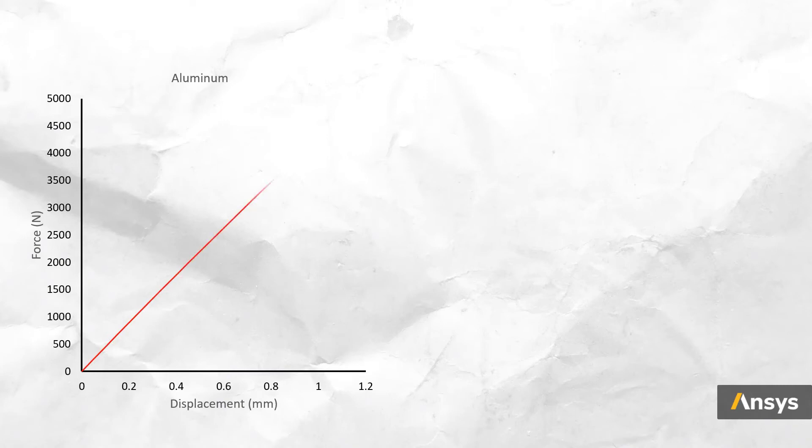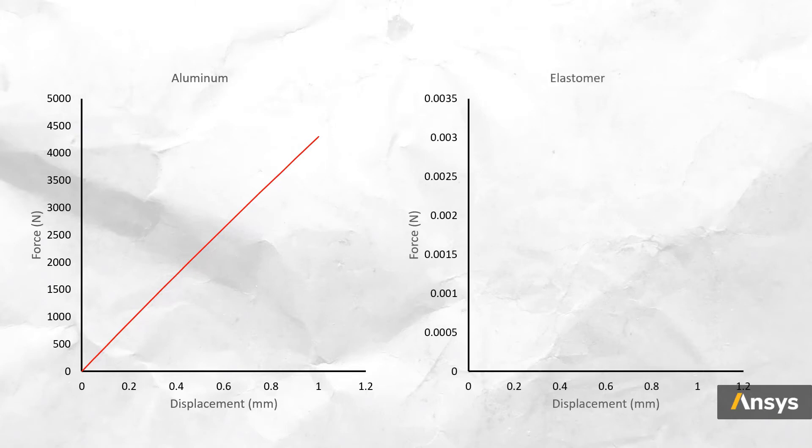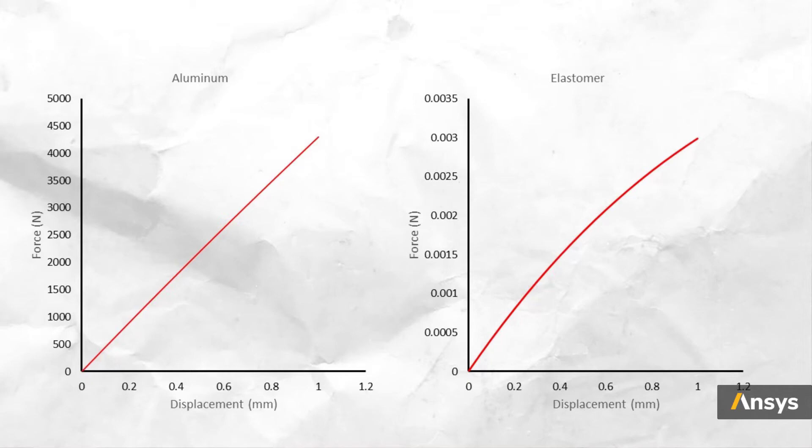However, due to their nonlinear material behavior, they tend to have a nonlinear force response even at small deformations. To demonstrate this, we perform a displacement-controlled test on two dog bone samples — one made of elastomer and the other made of aluminum. Since we are operating under small deformation, the aluminum sample records a linear force-displacement response. But at the same small deformation, the elastomer sample records a nonlinear response. Even though there isn't a huge change in the area of cross-section, the elastomer sample deforms nonlinearly due to its material behavior. So a nonlinear solver is required to analyze a system made of such materials.